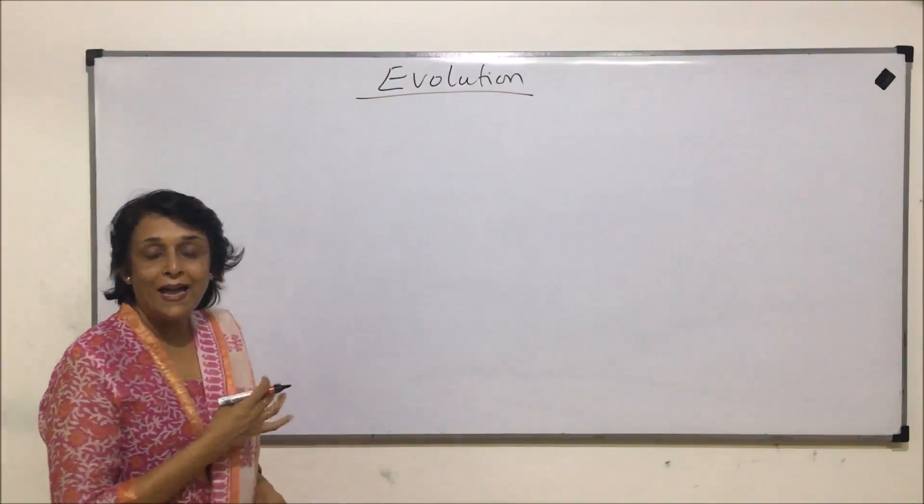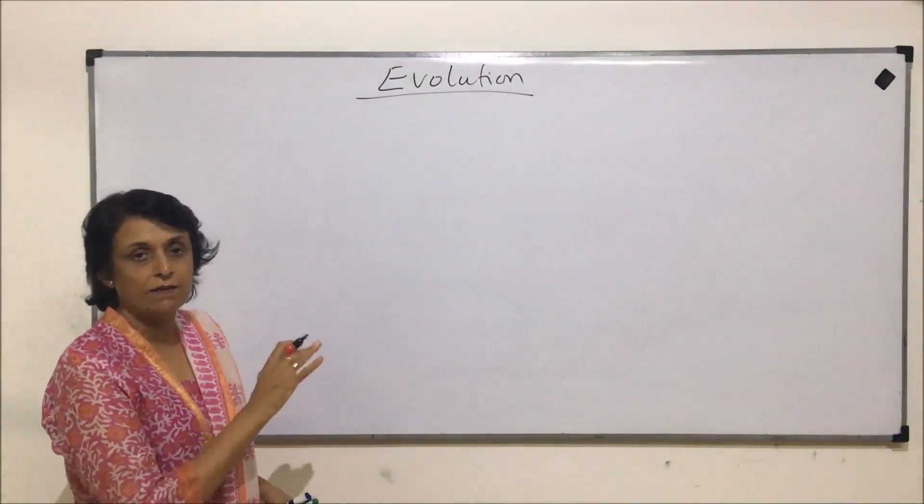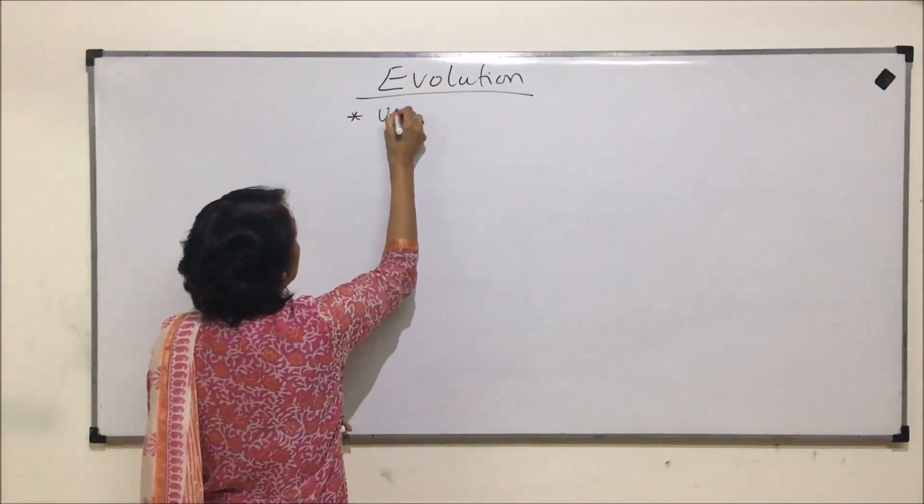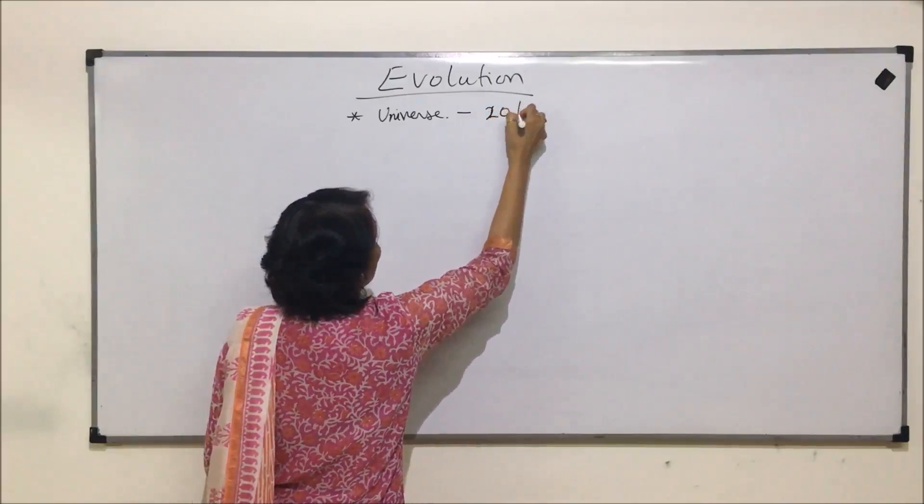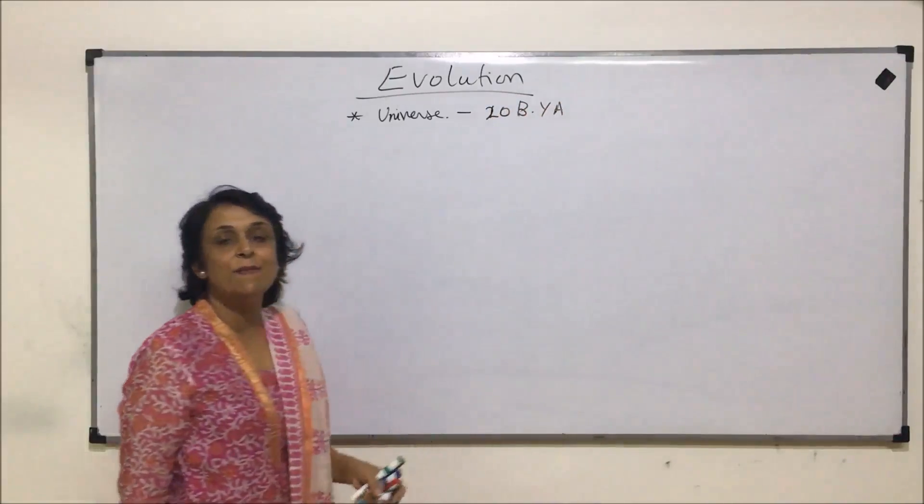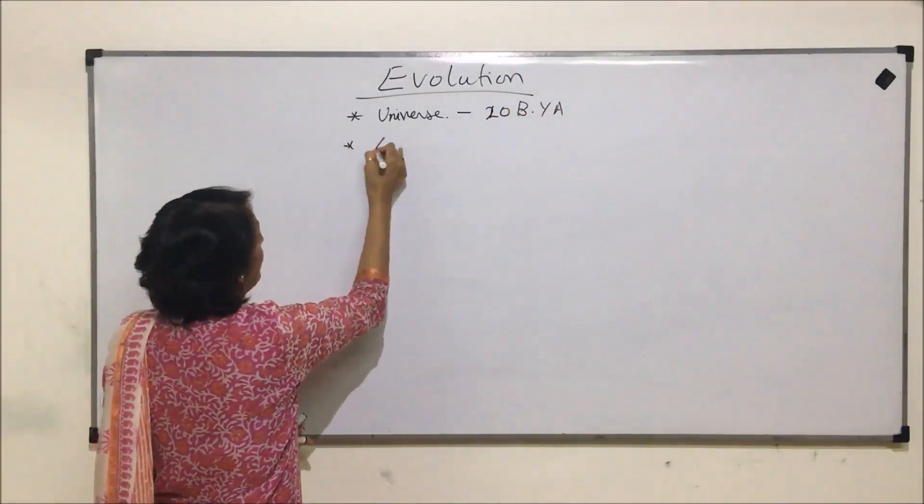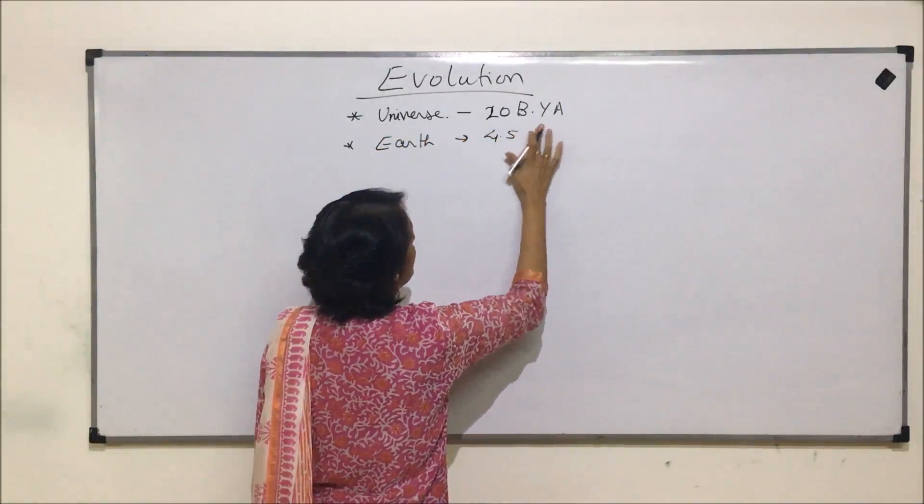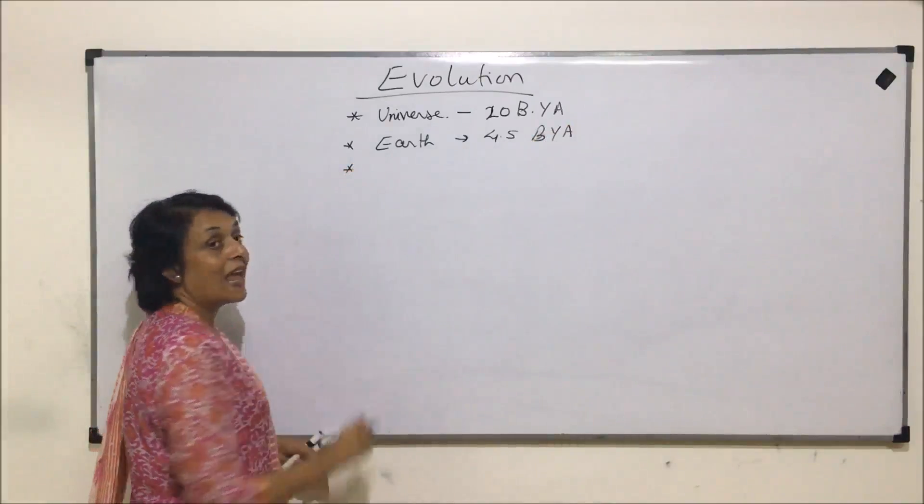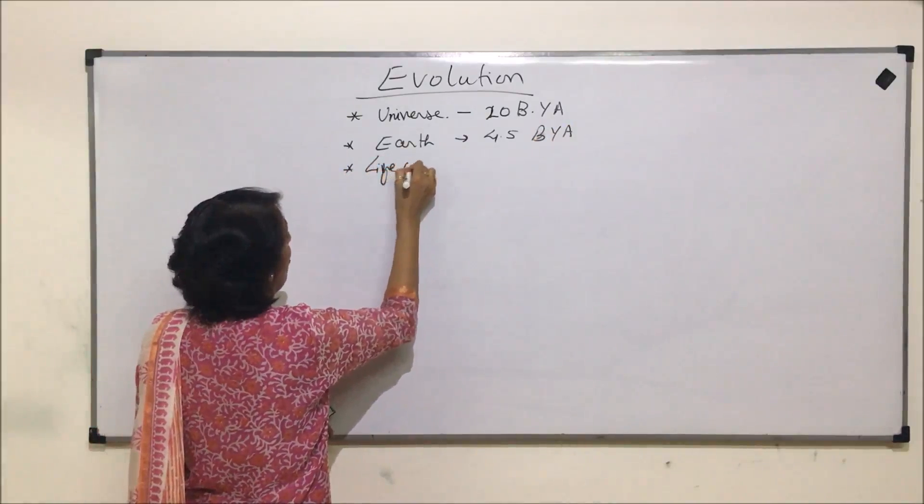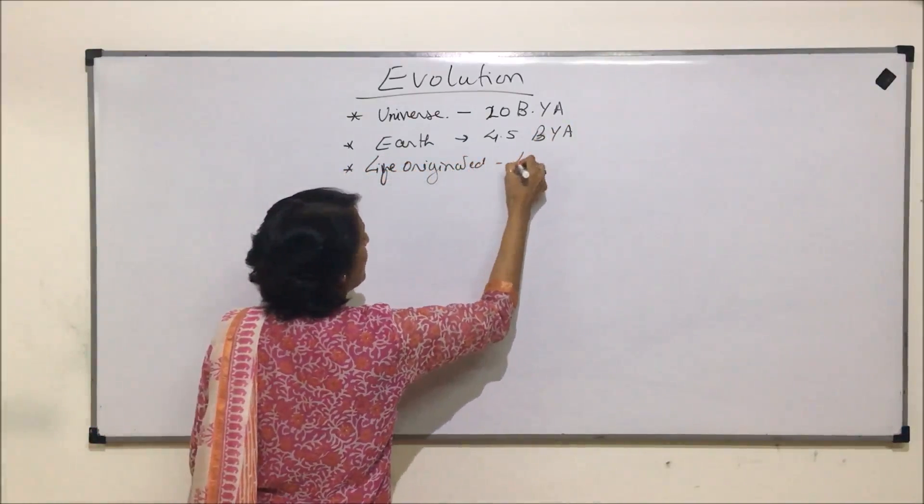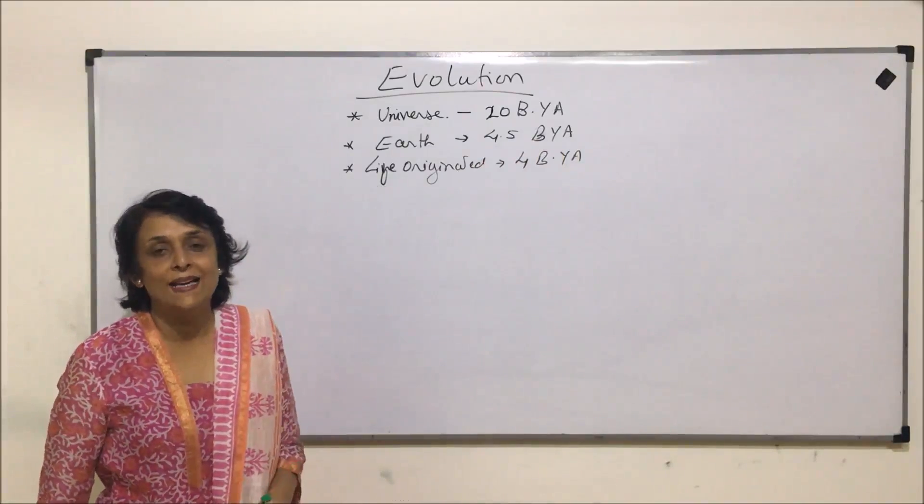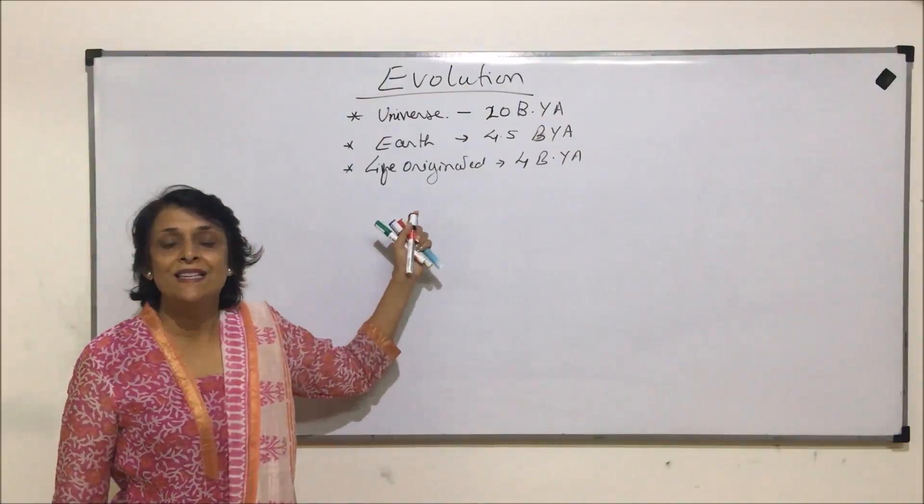Before we actually take the process of evolution, various theories and everything, let us talk about certain basic things which we already know. We are not very 100% sure, but most likely this is probably what happened. Universe was formed about 20 billion years ago. Earth was formed 4.5 billion years ago, and life originated approximately 4 billion years ago.